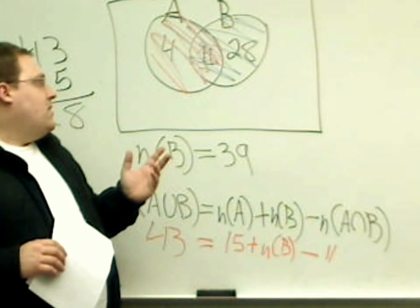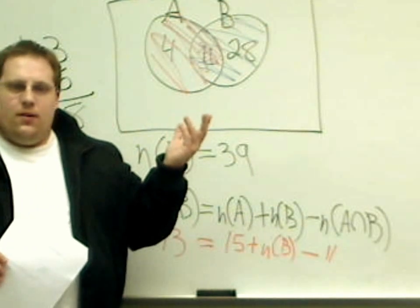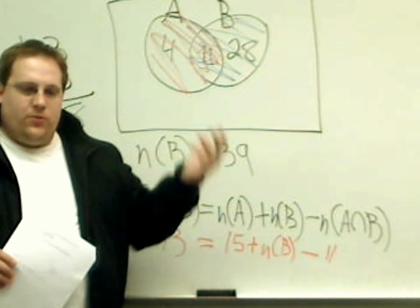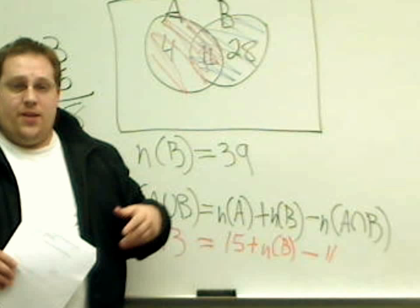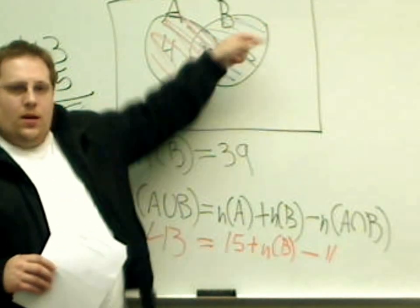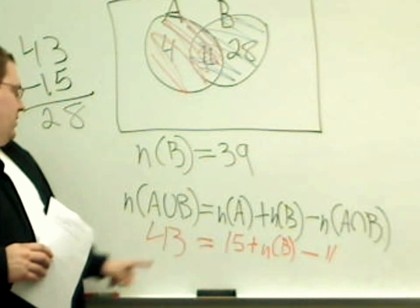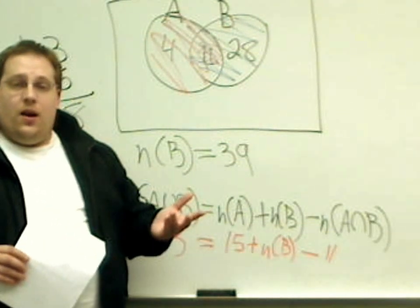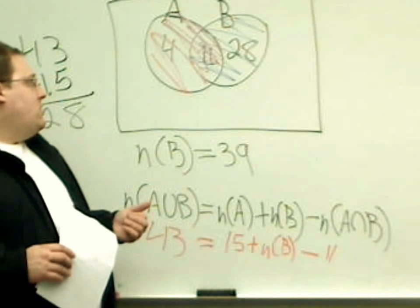The only other thing that could be added to this is if I told you that the number of things that we were looking at in my sample space was, say, 100 things. Well, inside A union B, we only had a total of 43. So if I was, say, surveying 100 students, there's 100 students.